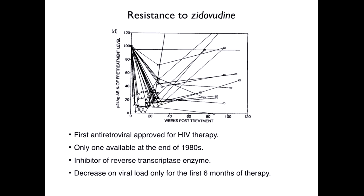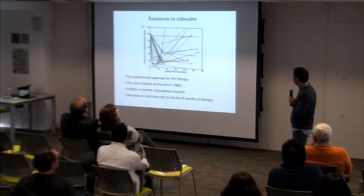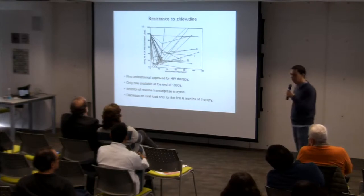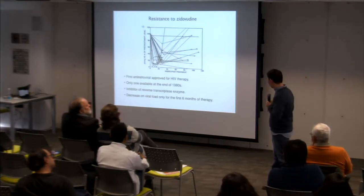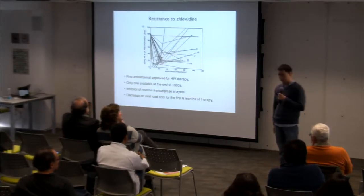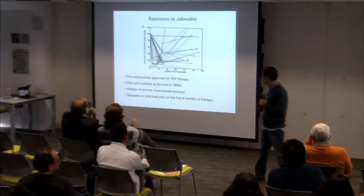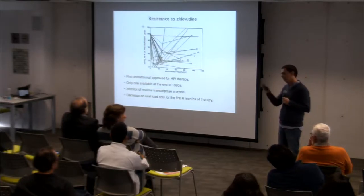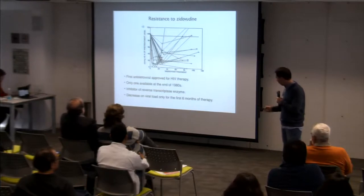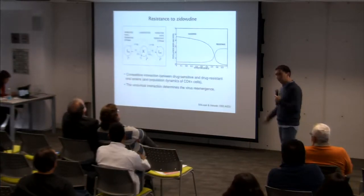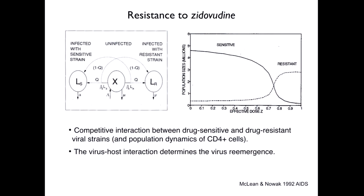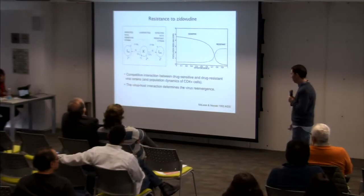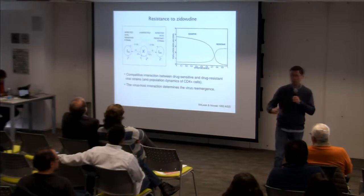Back in the late 80s we saw the first antiretroviral being used — it was the only one available. It was effective only for the first few months when it was given, and then we lost all the effectiveness. The reason was drug resistance. At the time, people weren't expecting that, but they realized it after some time. Not much long after, mathematicians, physicists, and others started looking at this as a dynamic problem and proposing compartmental models using cells involved in the process of infection.